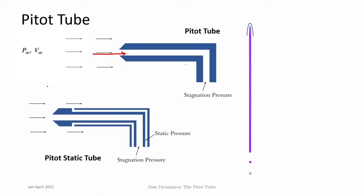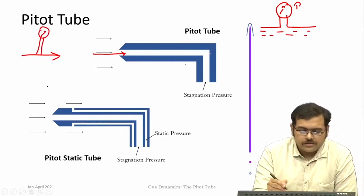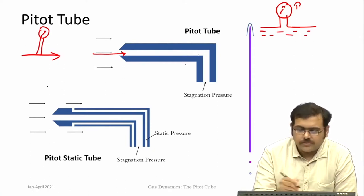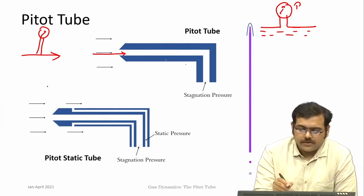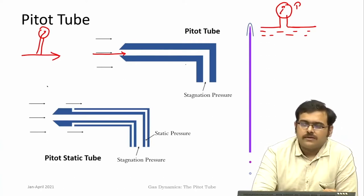A pitot tube actually measures the stagnation pressure of the flow. It is always kept normal to the flow direction. If you are measuring the static pressure, it is always measured parallel to the flow direction. For stagnation pressure, it is measured normal to the flow, and when the flow stagnates within the tube you measure the stagnation pressure. Effectively, pitot tubes measure stagnation pressure, but just by knowing stagnation pressure we cannot convert that into velocity — which is our final interest, to know either the velocity or Mach number of the flow at that particular point.